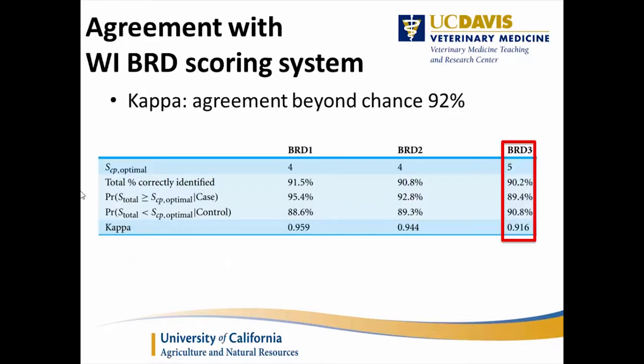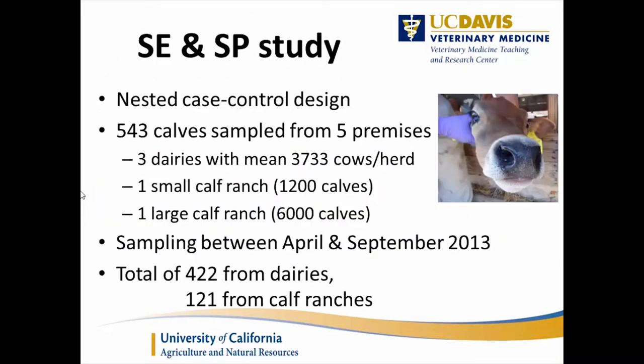Agreement-wise with the Wisconsin scoring system, we had 92% agreement beyond chance — excluding any agreement due to randomness, it was 90.2%.